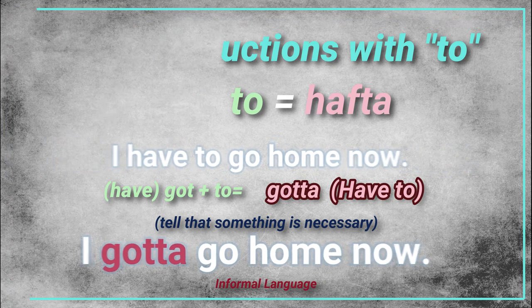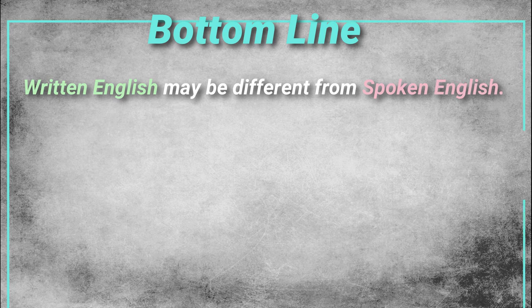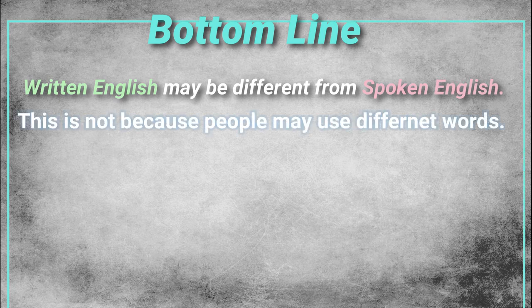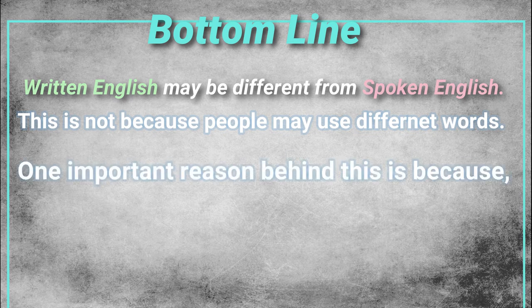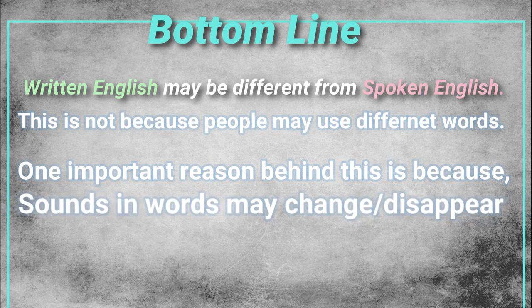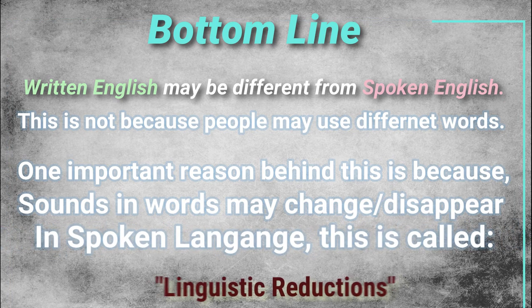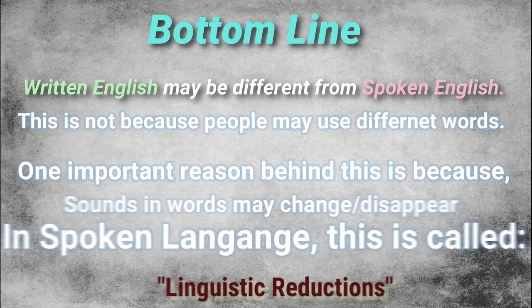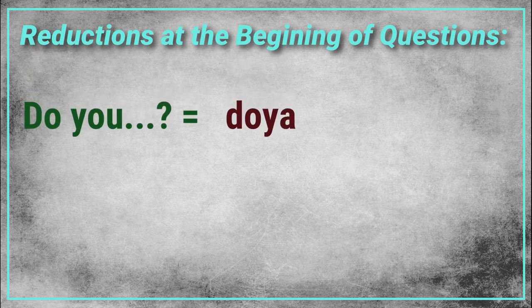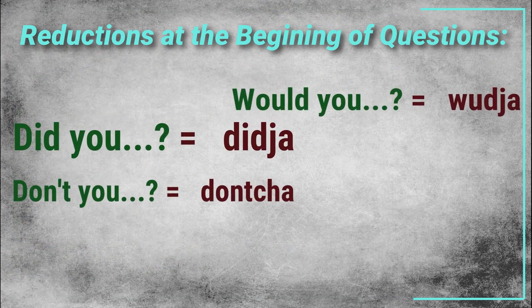So, the bottom line is that the English that you have learned at school can be very different from the English that you'll hear in conversations. And this is not because people are using different words, but a big reason behind this is because, in spoken English, the words do not always sound the same as they would be written. Instead, sounds in words tend to change and disappear when spoken at normal speed — which we call linguistic reduction. Know that there are many other reductions, most of them found at the beginning of questions. Here's a list: "Do you wanna help me?" "Are you gonna help me?" "Can you?" "Could you?" "Would you?" "Did you?" "Don't you?" And so on.